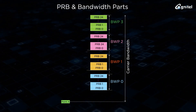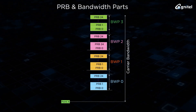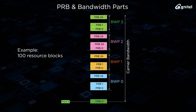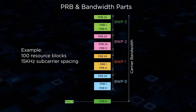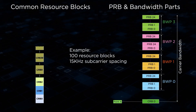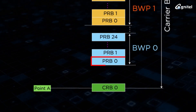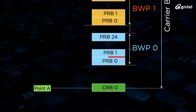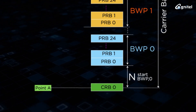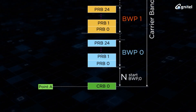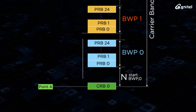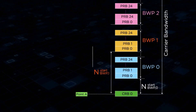This is achieved with the help of the Common Resource Block, or CRB. In the above example of 100 resource blocks with 15 KHz sub-carrier spacing, there will be absolute numbering of Common Resource Blocks starting from 0 to 99. PRB 0 in bandwidth part 0 will start from a reference point that is CRB 0. PRB 0 in the next bandwidth part, which is 1, will be 25 PRBs away from the reference point CRB 0, and so on.